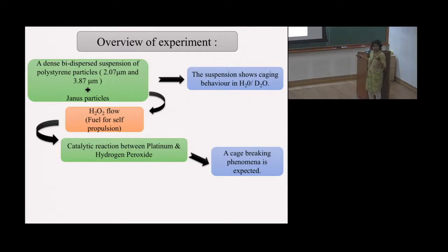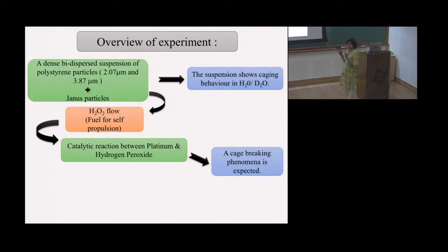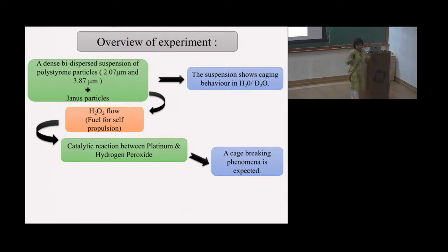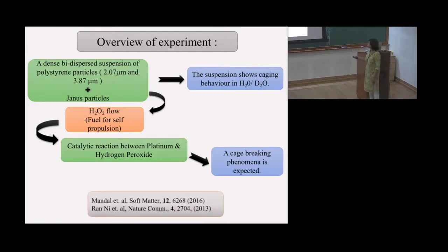When we add H2O2, you have the catalytic reaction because of the platinum. The peroxide decomposes into water and oxygen, and you see a cage-breaking phenomenon. This has been shown in simulations, and we try to recreate the situation in an experiment.